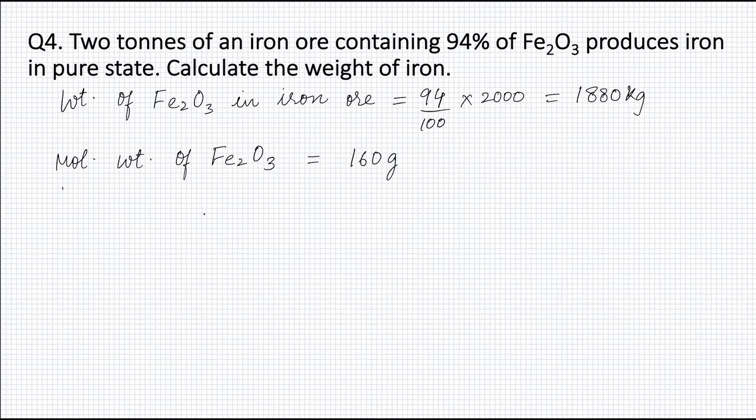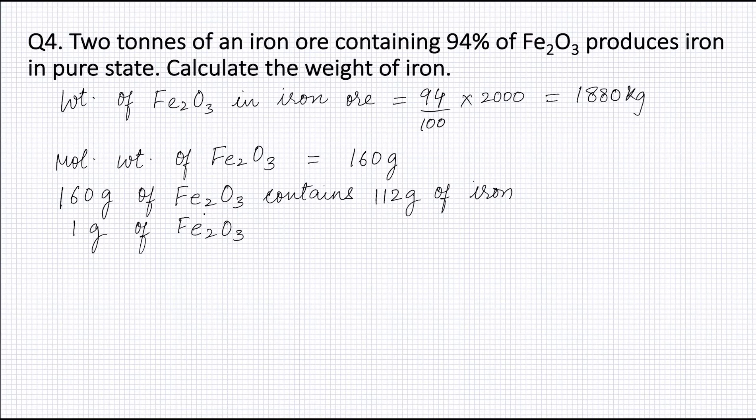Therefore, we can write 160 grams of Fe2O3 contains 112 grams of iron. The amount of iron in 1 gram of Fe2O3 will be 112 divided by 160.